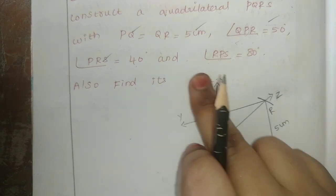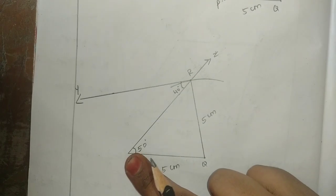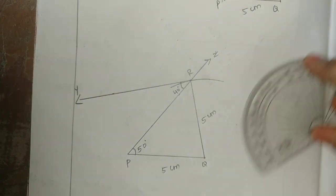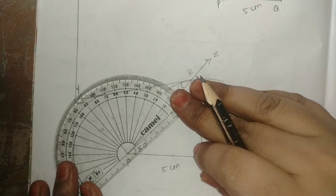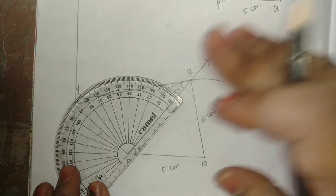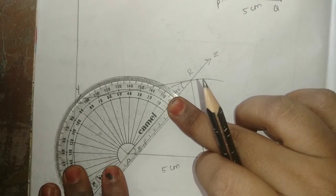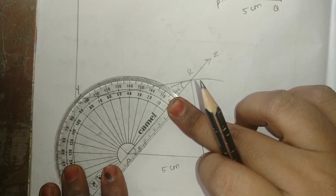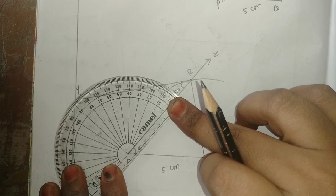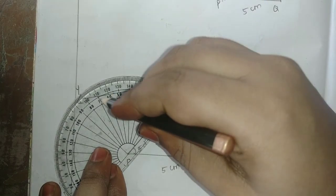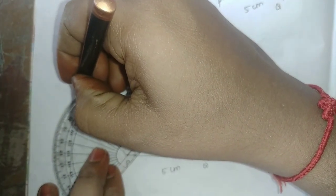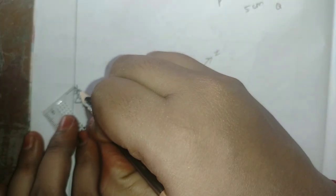Next, the last angle: RPS is 80 degrees. At point P, place the protractor on the R-P line. Count: 0, 10, 20, 30, 40, 50, 60, 70, 80. Mark 80 degrees. The two lines intersect at 80 degrees, giving us point S.